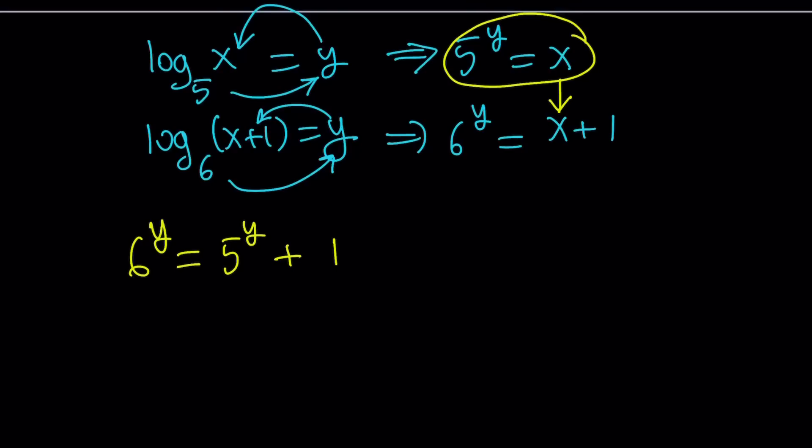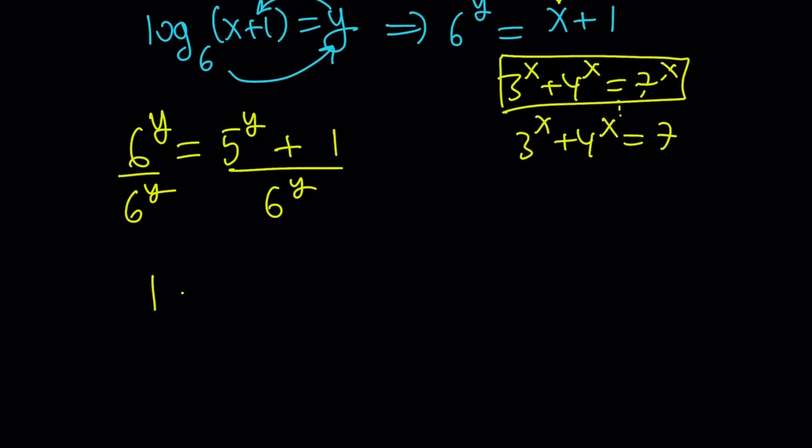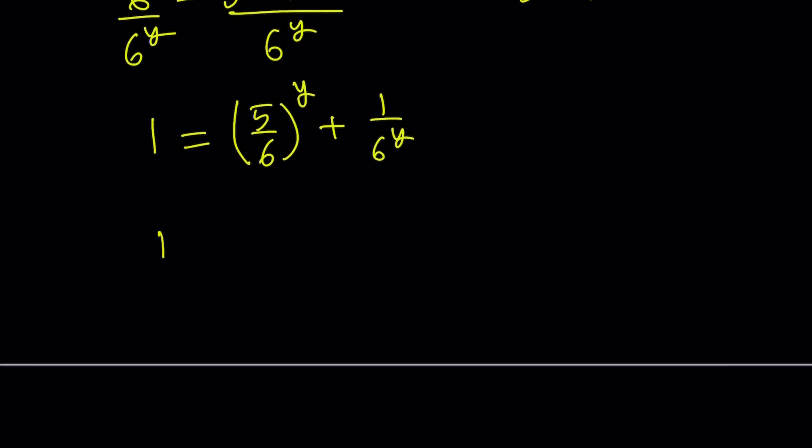But what else can we do? So we can look at a couple of things. One of the things that I'm going to do, and we've done quite a few problems of this kind, where we have something like 3 to the x plus 4 to the x equals 7, so on and so forth. These problems are very similar. And the idea is similar behind these, especially for the first one. Dividing both sides by the highest base. In this case, it happens to be 6. So we're going to divide both sides by 6 to the power y.